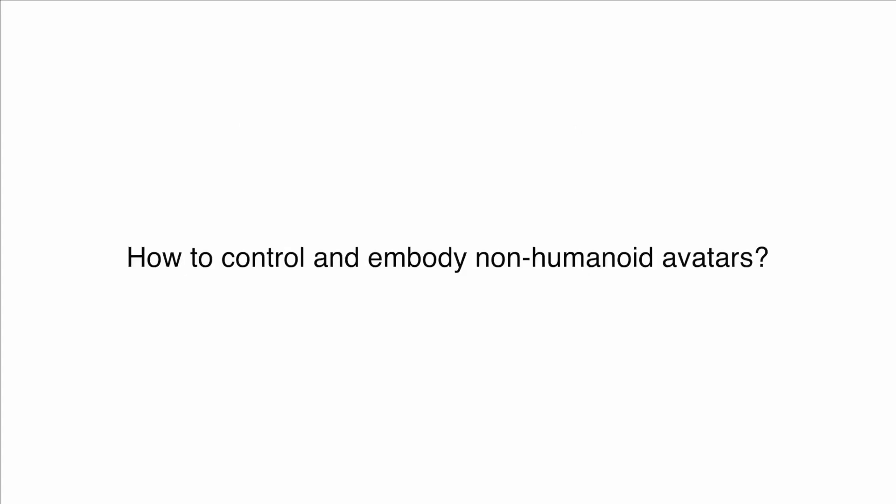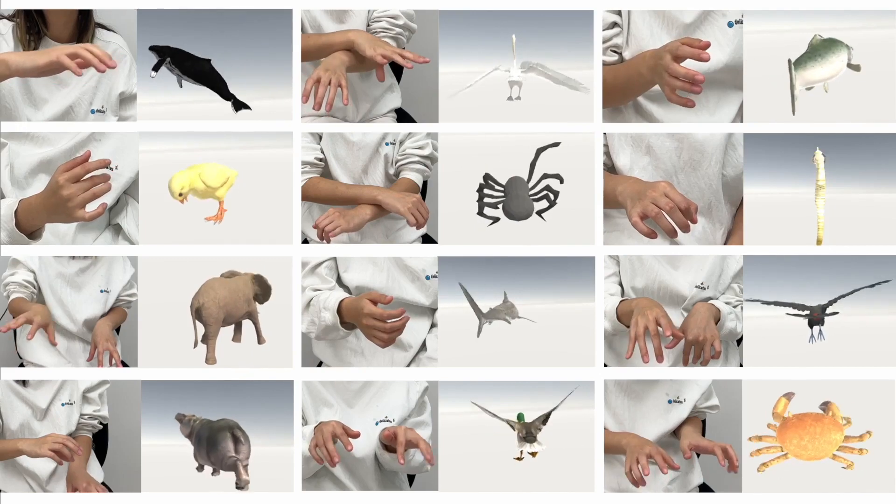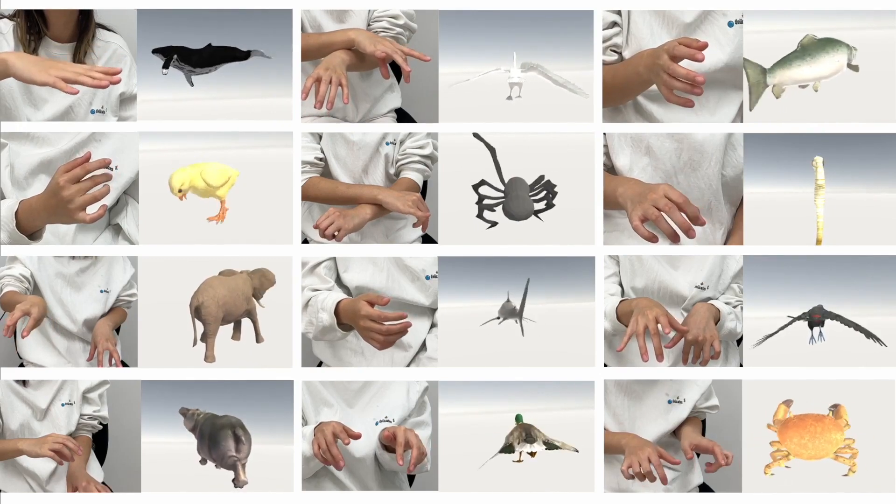Manipulating non-humanoid avatars which are topologically different from the users is challenging. We present Hand Avatar to enable users to control and embody non-humanoid avatars in real time.